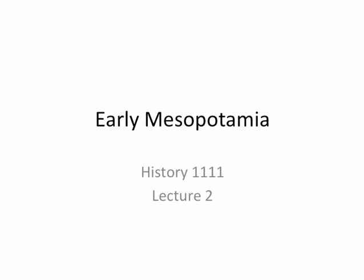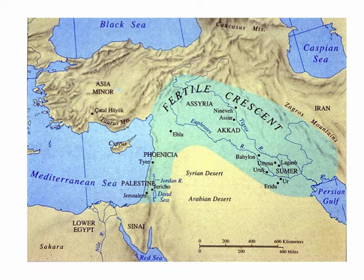The topic for this first video lecture is early Mesopotamia. At the end of the lecture on prehistory, I mentioned that the origins of civilization are found in four regions of the world, and what they all had in common was that these early civilizations grew up around rivers. In fact, the name Mesopotamia is a Greek word that means the land between two rivers — the Tigris and the Euphrates, which you can see here on the map.